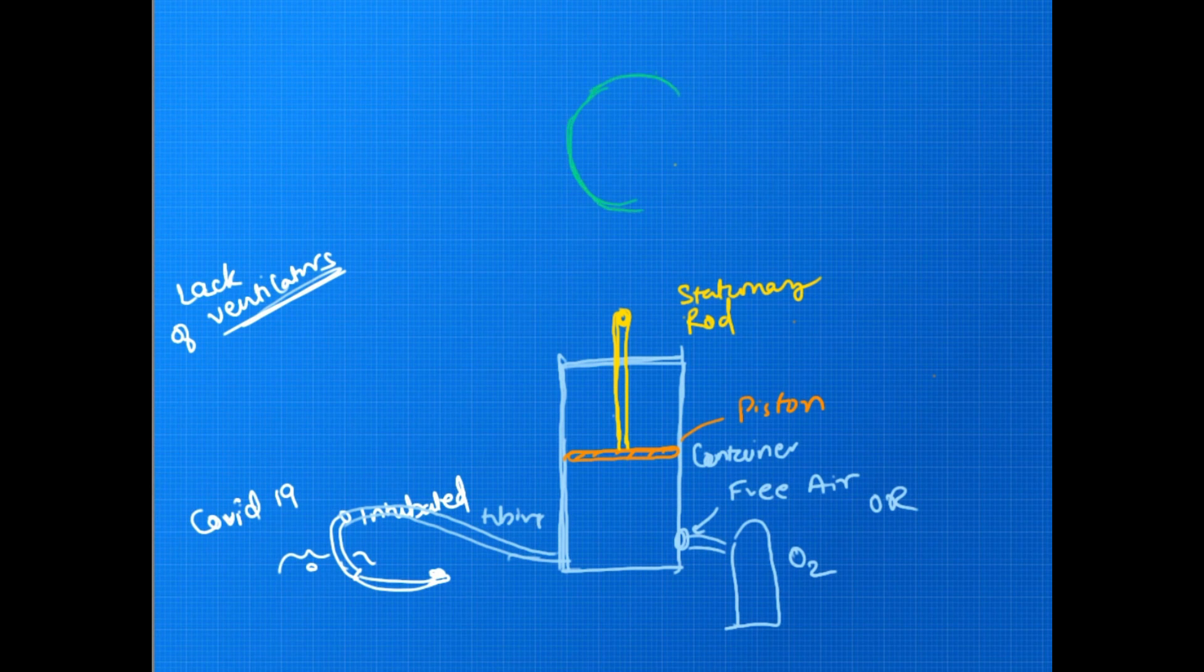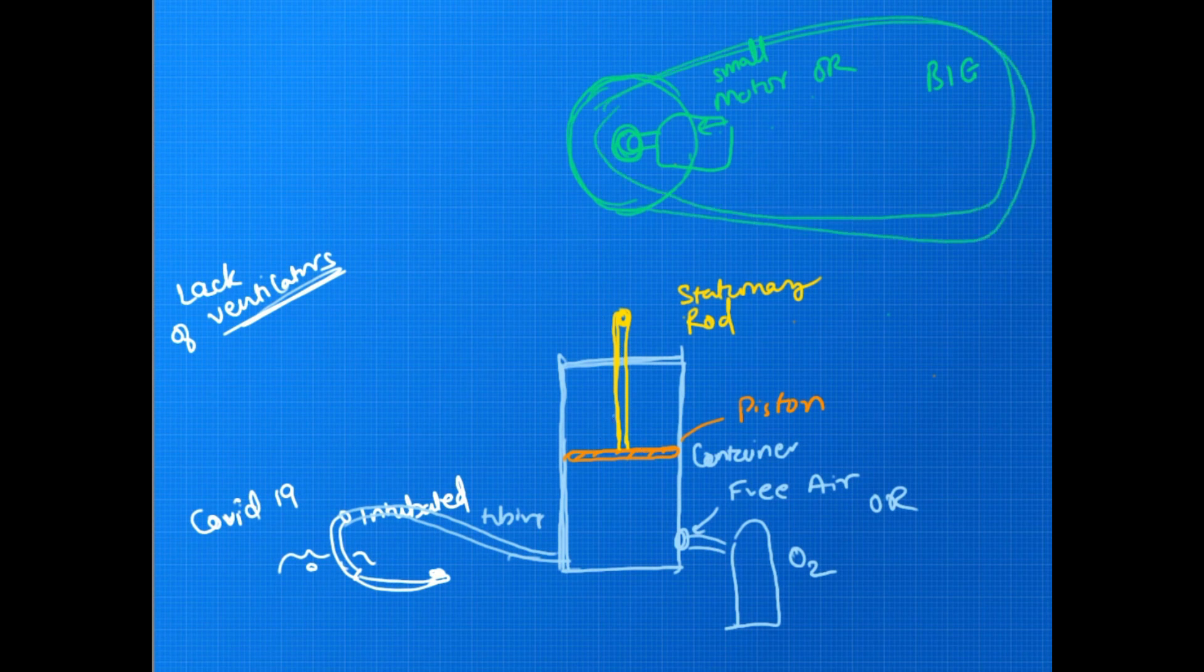What we basically have here is a cylinder which could be either made up of glass or plastic as long as it is able to smartly fit with this disc. This disc is like a piston. Now there will be a stationary rod following this piston which will rest on it.